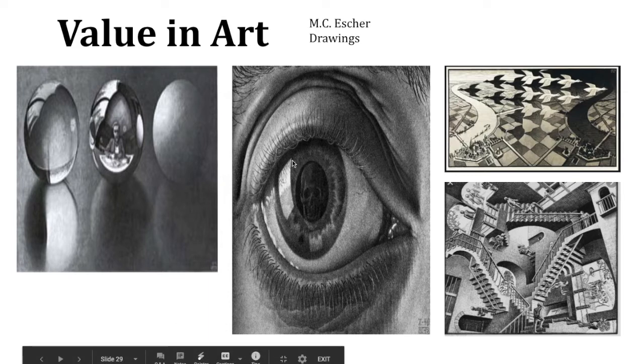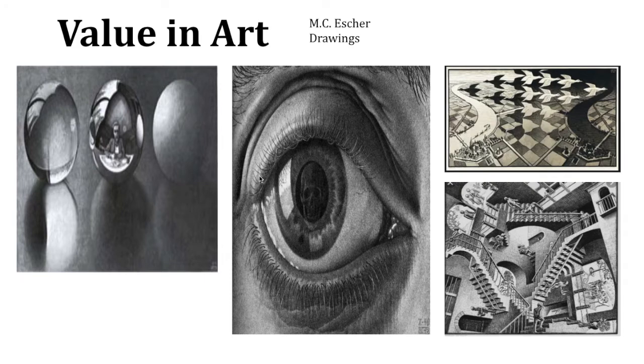M.C. Escher uses so many different values. He manages to get so many lights, darks, and gray tones, mid-tones in there. And it just, it's so reflective. And there's a skull in the middle of this eye.